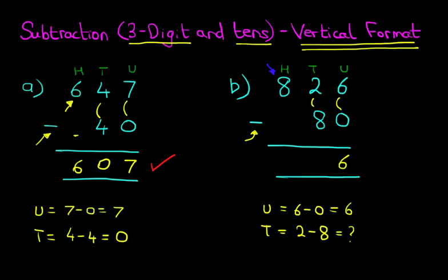We have 8 hundreds. So what we're going to do is we're going to cross out the 8. 8 minus 1 is 7. Now the one we have taken from here, we're going to move to the right, and it becomes part of the tens column.